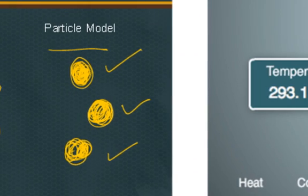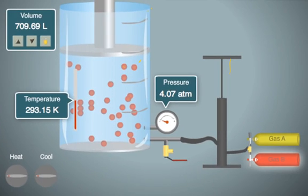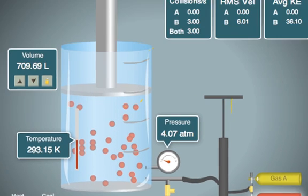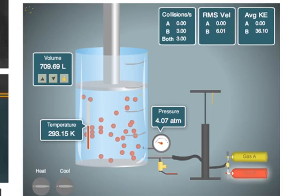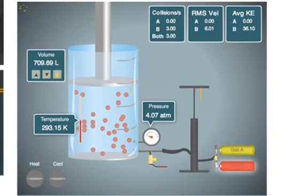Let's take a look at the simulator we're going to be using in this class. There's a lot going on in this particular picture of the simulator. In this simulator, the red spheres inside this cylinder are our gas particles. We're going to model our gas particles, so a particle could be an atom, a molecule, or a formula unit — it doesn't matter; they all behave the same. In this particular model, these red spheres are all just a particle.